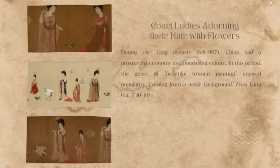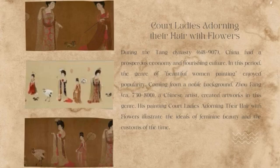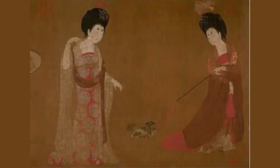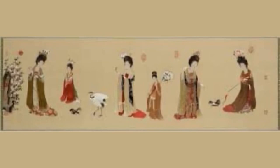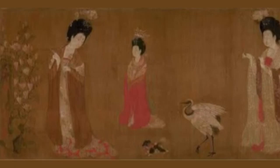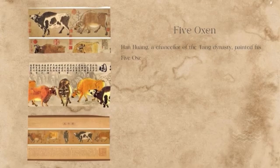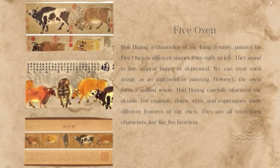The third is 'Court Ladies Adorning Their Hair with Flowers.' During the Tang dynasty, China had a prosperous economy and flourishing culture, and the genre of beautiful woman painting enjoyed popularity. Coming from a noble background, Zhou Fang, a Chinese artist, created artworks in this genre. His painting illustrates the ideals of feminine beauty and the customs of the time. The fourth is 'Five Oxen' — Han Huang, a chancellor of the Tang dynasty, painted five oxen in different shapes.